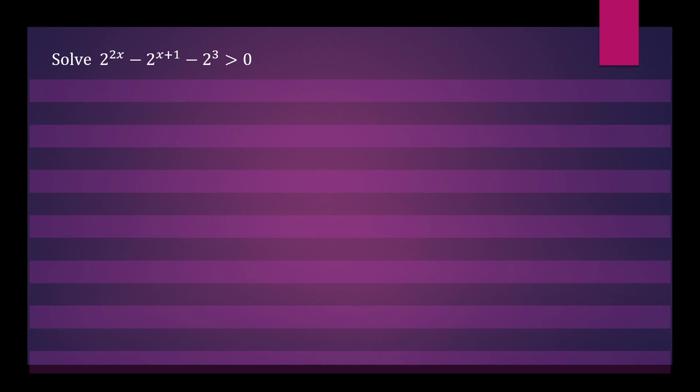Hi everyone, let's try to solve this exponential inequality. We have 2^(2x) - 2^(x+1) - 2^3 > 0.